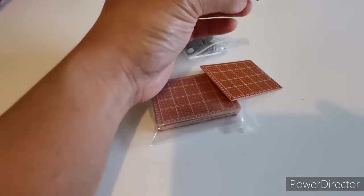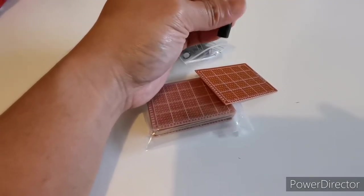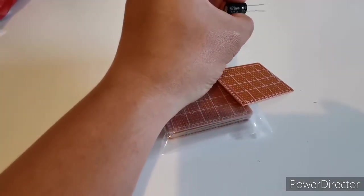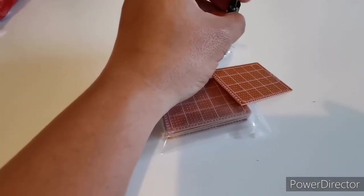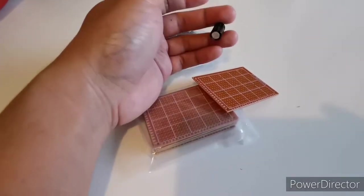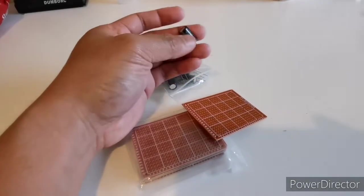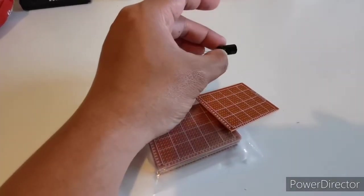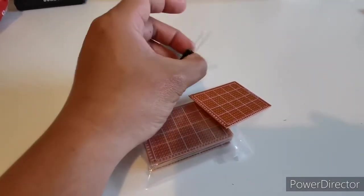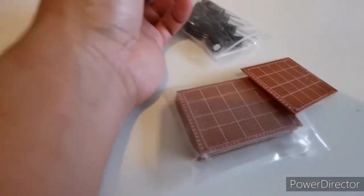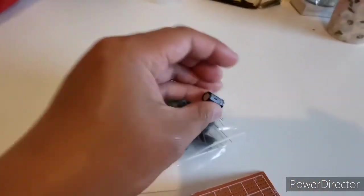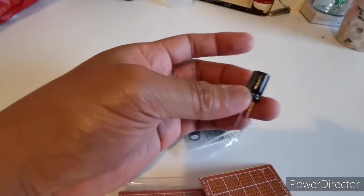They absorb the excess current or energy drawn by the motor and ESC from the battery. Too much draw or sudden draw can kill the battery or make it bloat, or at some point burn or explode.